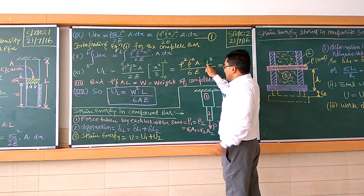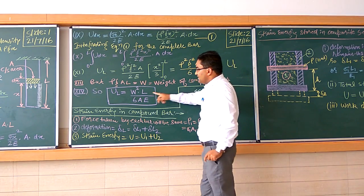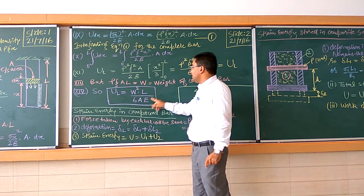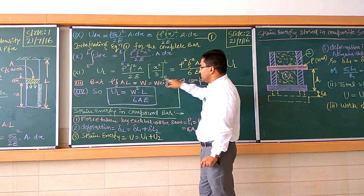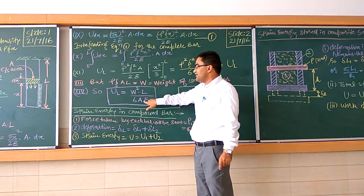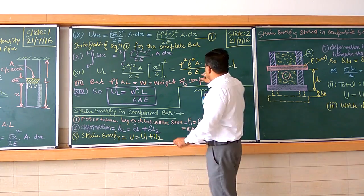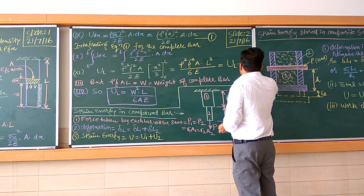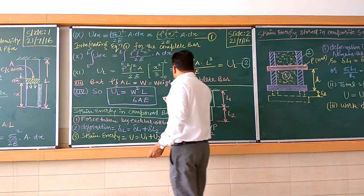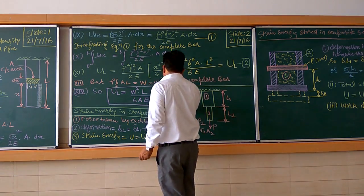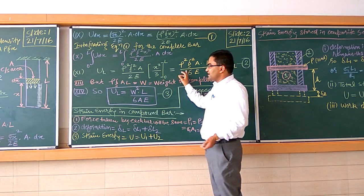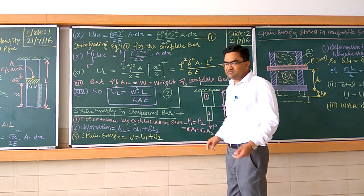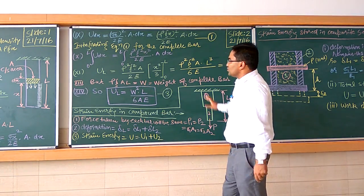We can arrange ρ²·g²·A·L³ / (6E) by substituting W = ρ·g·A·L, rearranging to get U_L = W²·L / (2·A·E). We can name the first form as equation number 2 and the reduced form as equation number 3. After reducing by substituting the value of W, this derivation is complete.